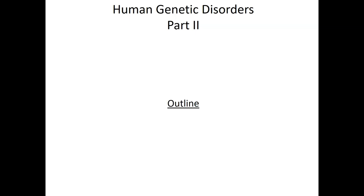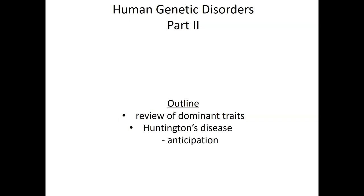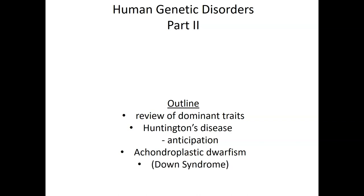Hello again, everybody. Welcome to the second lecture of the third unit. This is Human Genetic Disorders, Part 2. Today we're going to be talking about dominant traits in general, making sure we're comfortable with the Mendelian definition and principle of dominant traits. Then we'll move on to examples of human dominant disorders: first Huntington's disease, then achondroplastic dwarfism, and we'll end with Down syndrome.